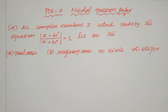PTA model question paper number 2, question number 4. All complex numbers z which satisfy the equation modulus of z minus 6i divided by z plus 6i equal to 1 — find where they lie.